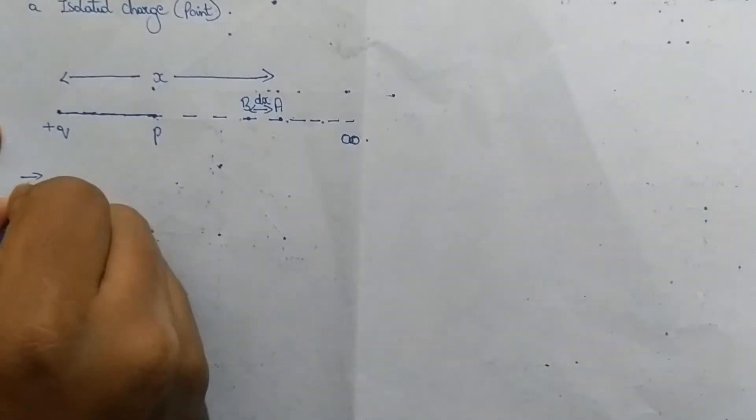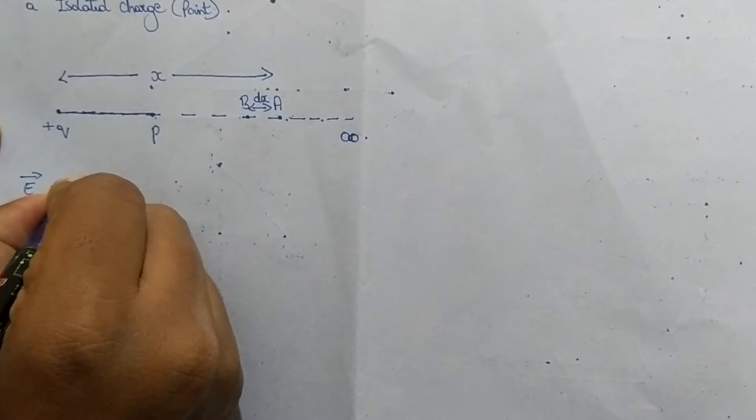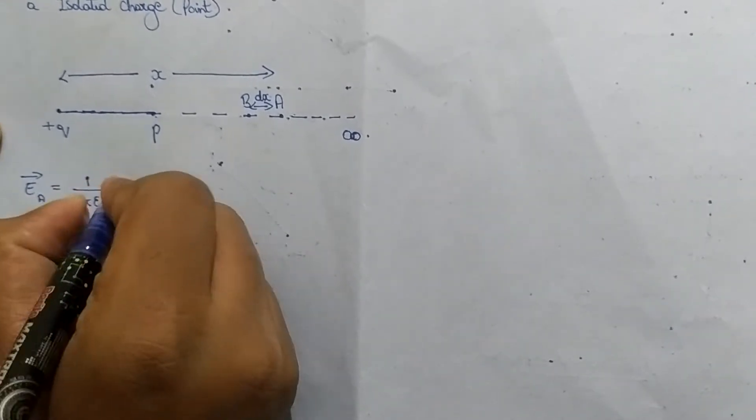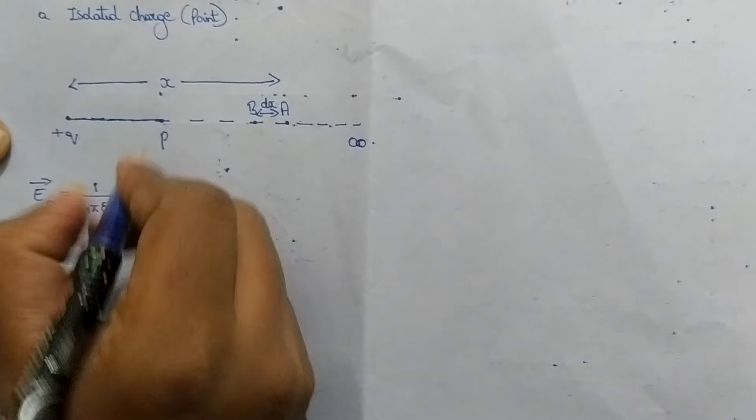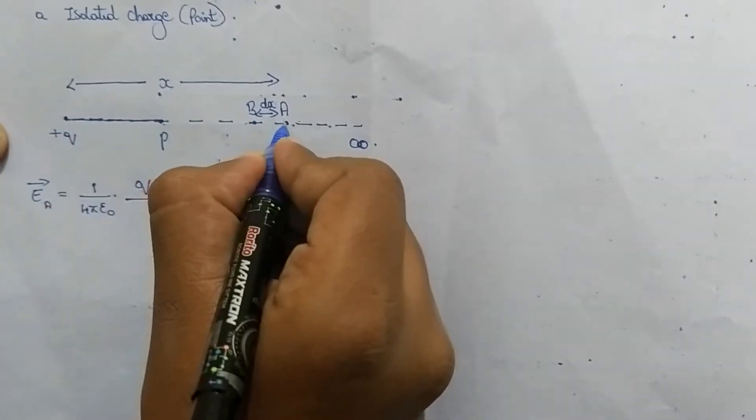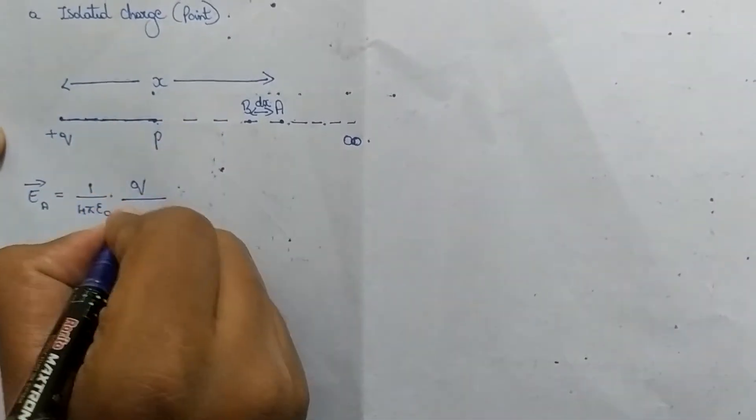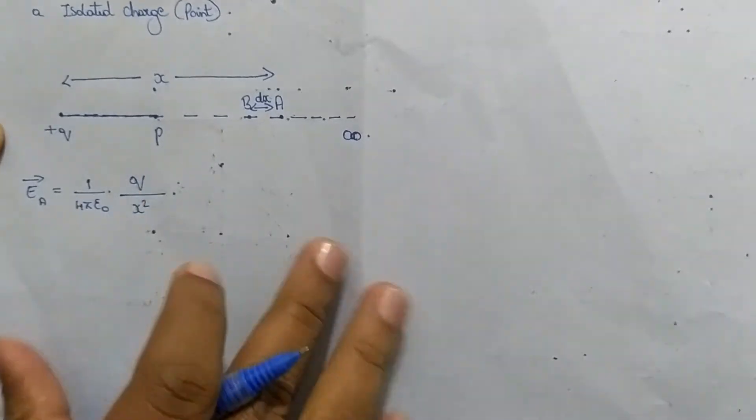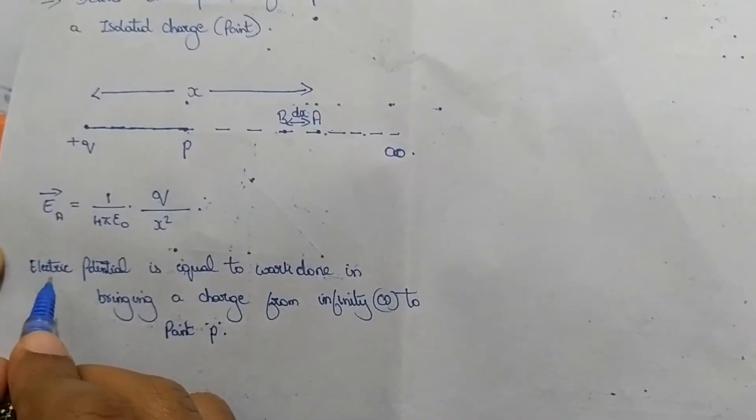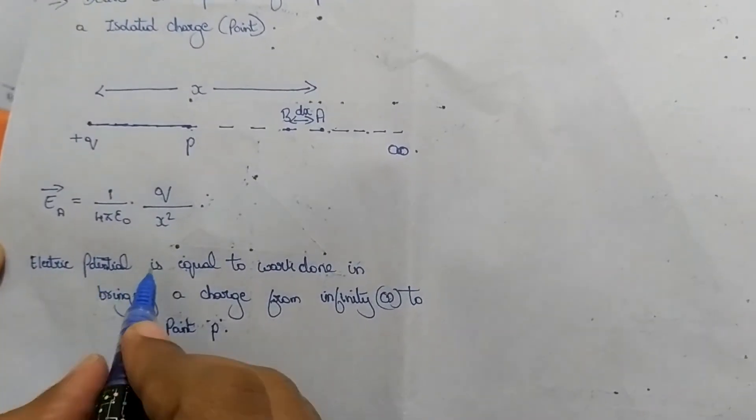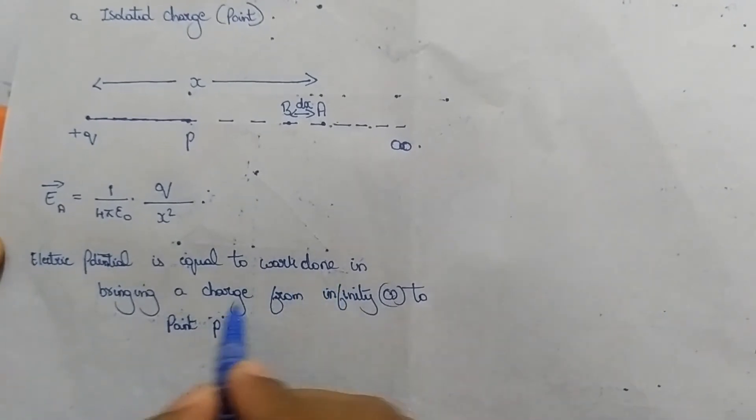Electric field at A is given by, from Coulomb's law, 1 by 4πε₀ Q by distance between the charge and the point A is x, x². Electric potential is equal to the work done in bringing a charge from infinity to point P.